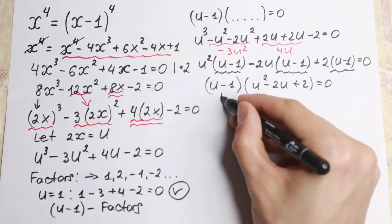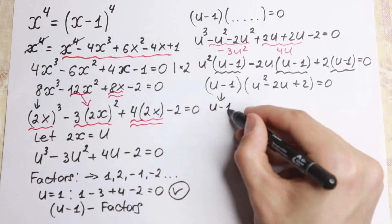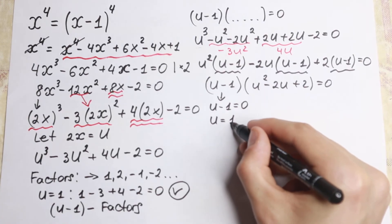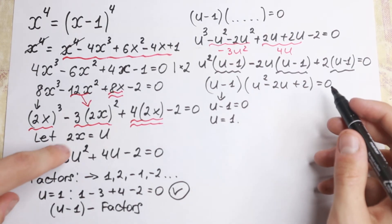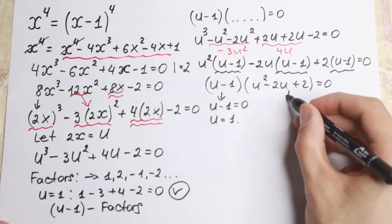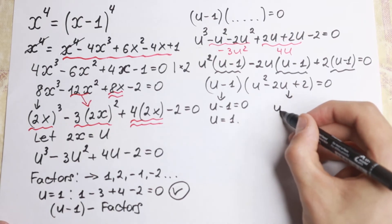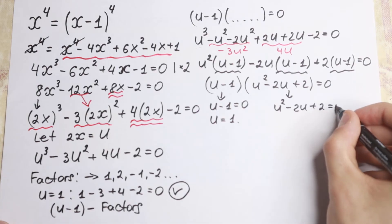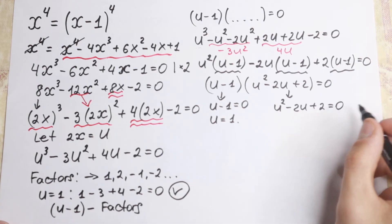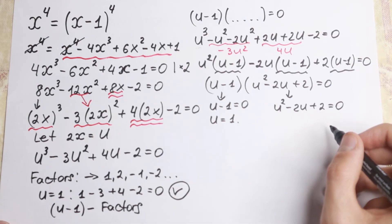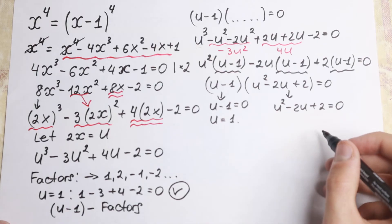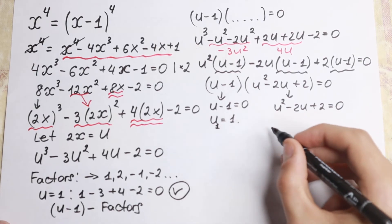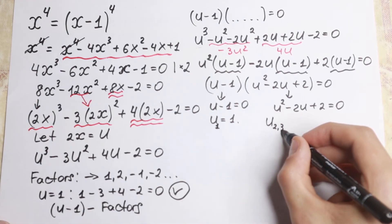From (u minus 1) equal to 0, we get u equal to 1 — this is our first root. From the second factor, u squared minus 2u plus 2 equal to 0, we need to find u second and third.